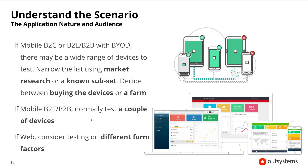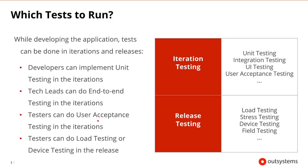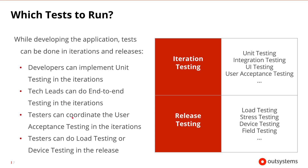If we're testing a web app, then testing on different form factors like desktops, tablets, and mobile devices can be important. Once we understand the scenario and the application better, we can decide which tests we need to run. While developing the application, some tests will be done in the iterations and some tests will be done in the release stage. The testing work is also divided between several roles in the team. The developers can implement the unit tests, the tech leads can do the end-to-end testing, and the testers can coordinate the user acceptance testing in the iterations. Testers can also do load testing and device testing in the release stage. Tests more specific to iterations are typically the functional tests, while tests more specific to the release stage tend to be non-functional tests.